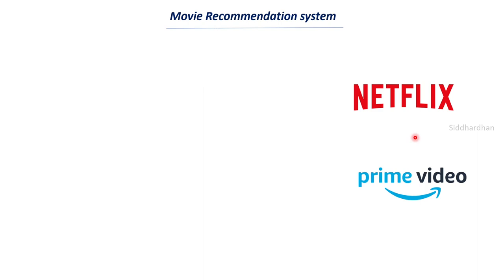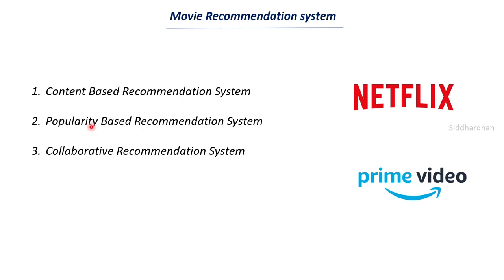When we talk about recommendation systems there are three main types. First is the content-based recommendation system, second is popularity-based, and the third is collaborative. These recommendation systems are made using several machine learning concepts and techniques, making this one of the main applications of machine learning.